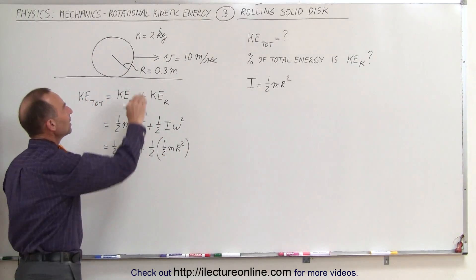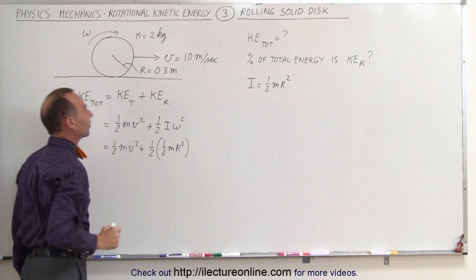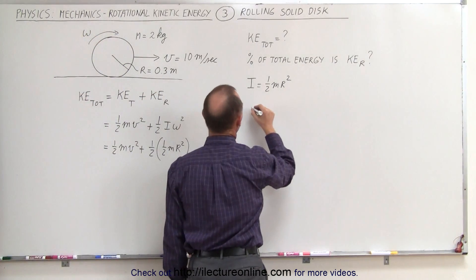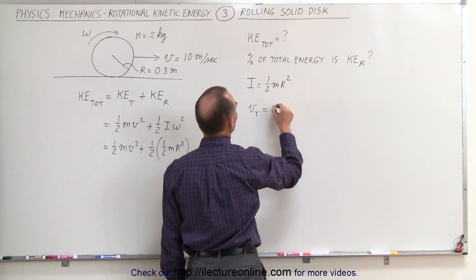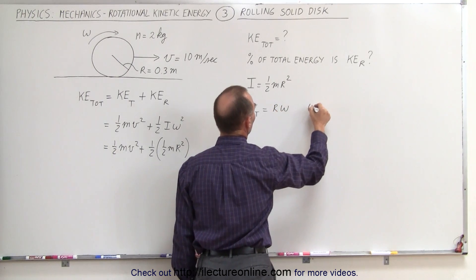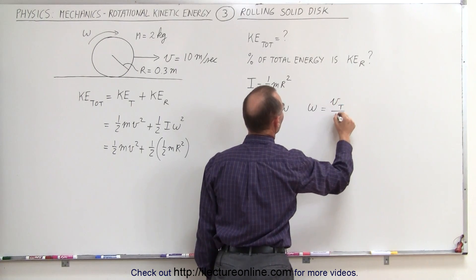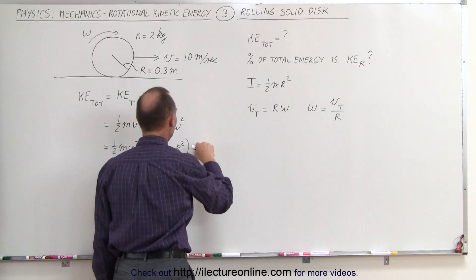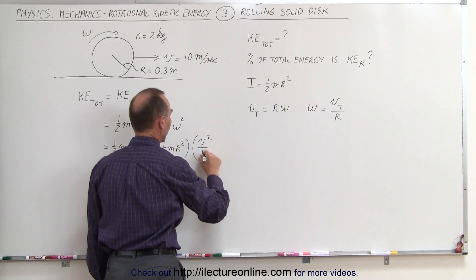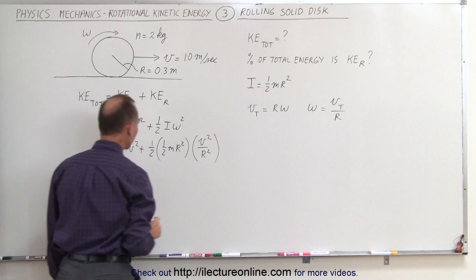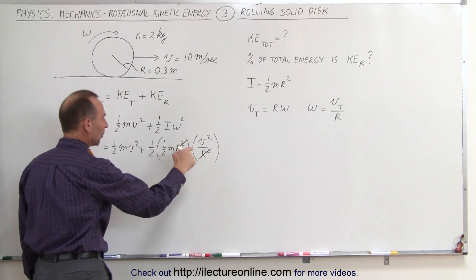Now there's a relationship between the translational velocity and the angular velocity. We know that by definition the translational velocity is equal to r times omega, which means that omega is equal to the translational velocity divided by the radius. We can plug that in and instead of writing omega squared we write v squared over r squared. Notice that the r squared terms cancel out.